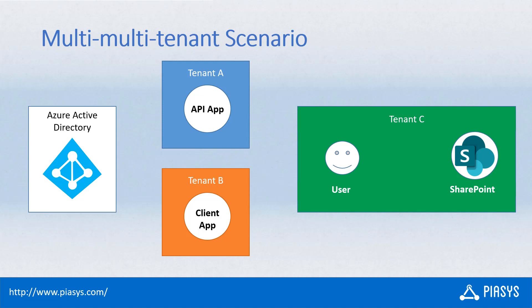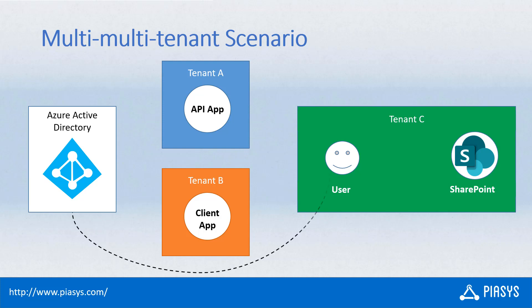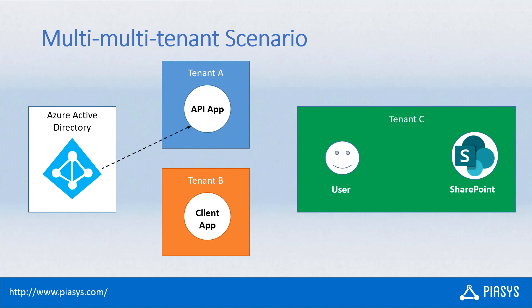First, the user will run the consumer application defined in tenant B. By doing that, he will authenticate using Azure Active Directory and grant permissions to run that application in his own tenant, tenant C. Because the client application defined in tenant B and registered in tenant C will get the user's access token, it will be able to provide that token to the API app running in tenant A, as long as that application is also registered in tenant C as a multi-tenant application. Leveraging the on-behalf-of functionality of OAuth in Azure Active Directory, the API app created in tenant A and registered in tenant C will be able to get an access token on behalf of the current user to consume the SharePoint Online tenant of tenant C.